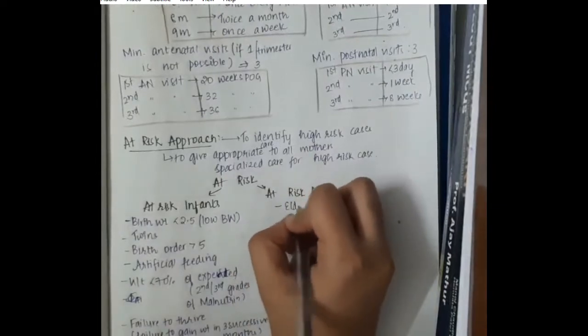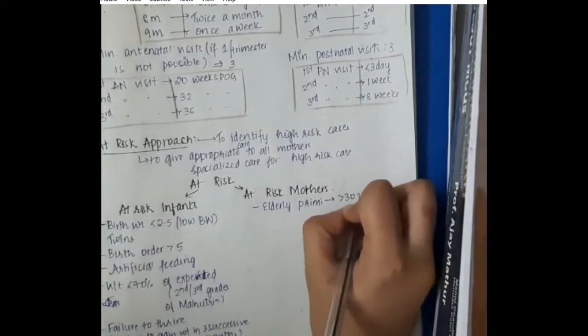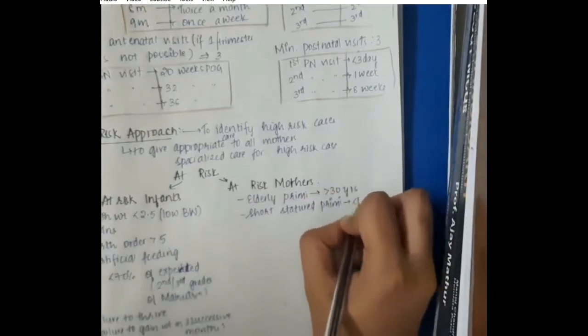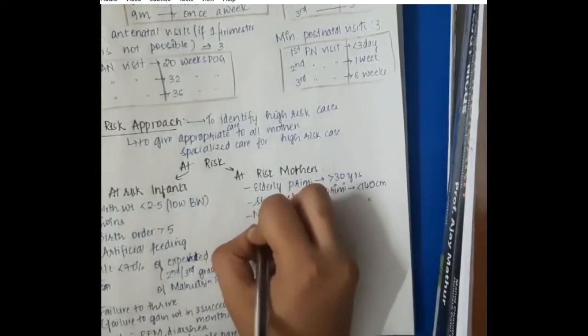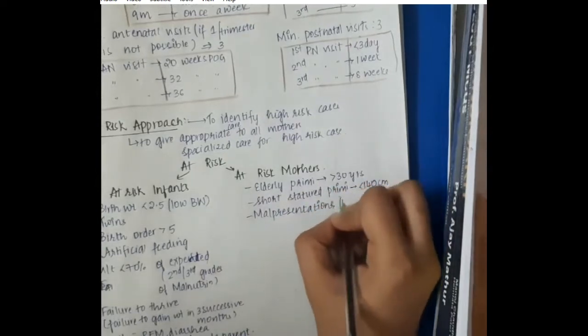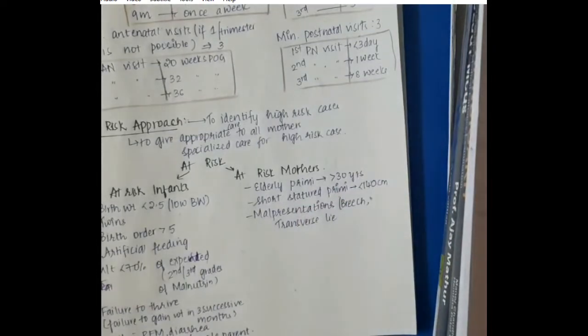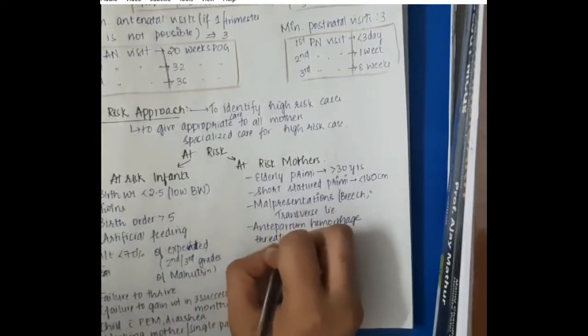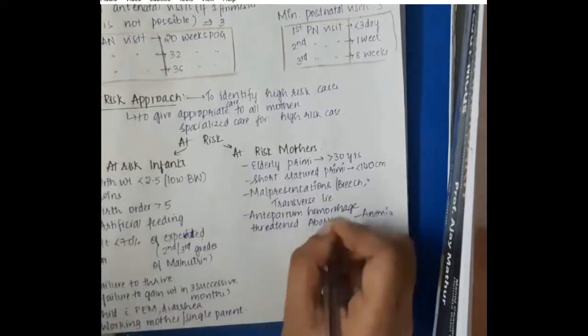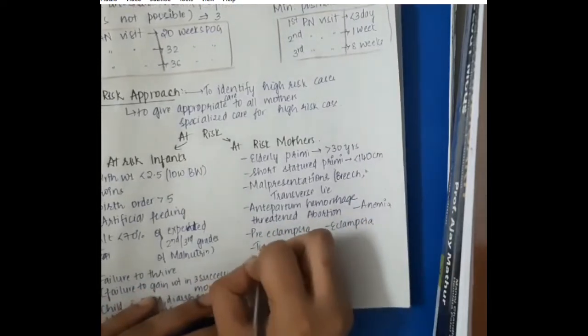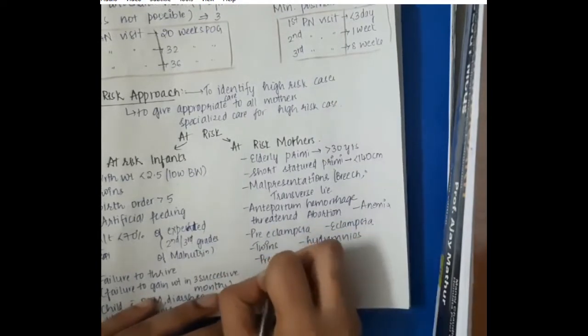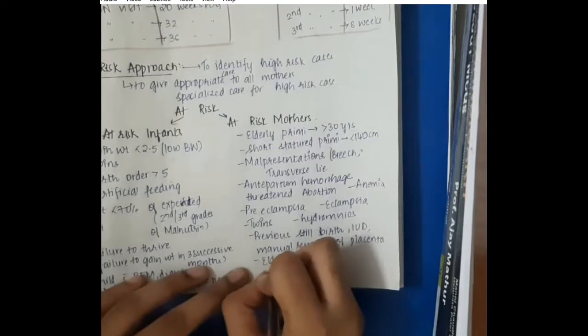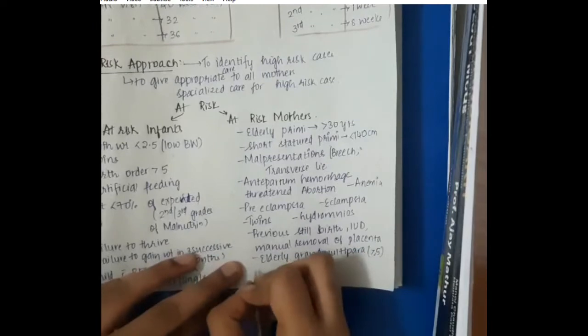Then we have at risk mothers. At risk mothers are those with problems during the antenatal period. At risk mothers are those with elderly primae that is more than 30 years of age, short stature less than 140 cm height because there is more prone to caesarean section. Malpresentations like breech and transverse lie because they cause complicated labor. Sometimes antepartum hemorrhage or threatened abortions like previous history of abortions also. Anemia because of decreased nutrient supply to the baby. Pre-eclampsia and eclampsia. Twins, hydramnios, previous stillbirths, intrauterine deaths, or sometimes if we have to do a manual removal of placenta. Elderly grand multipara that is more than or equal to 5 births.